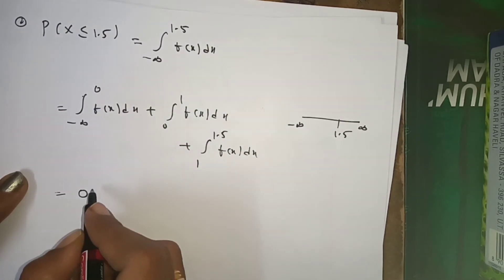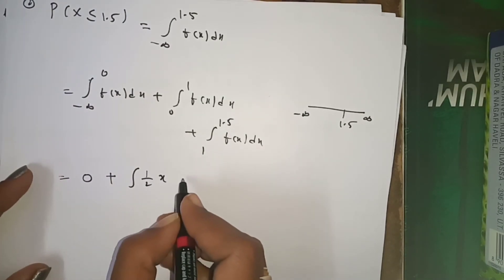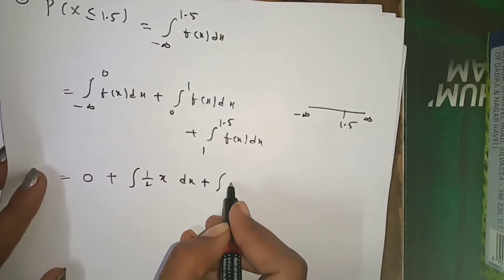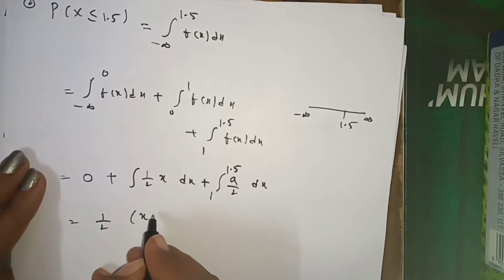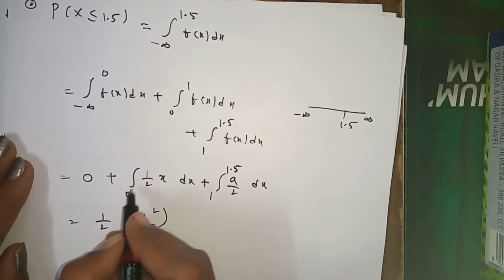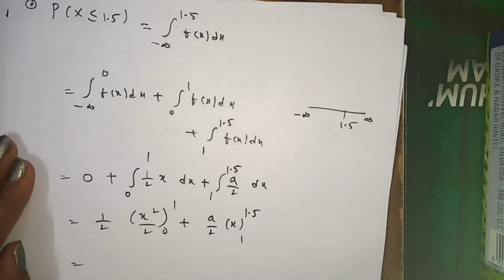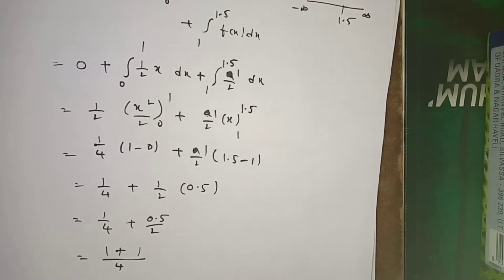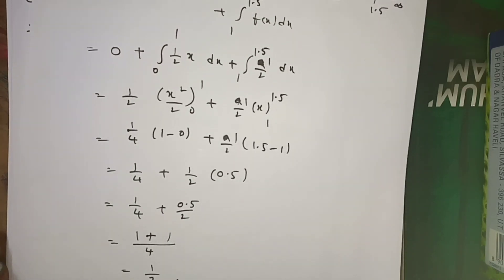In the remaining cases the value is 0, so the integral from minus infinity to 0 is zero. From 0 to 1, f(x) = ax = (1/2)x dx. From 1 to 1.5, f(x) = a = 1/2, so we integrate (1/2) dx from 1 to 1.5. Integrating gives (1/2)·(x²/2) from 0 to 1, plus (1/2)·x from 1 to 1.5. After simplification you get the answer.